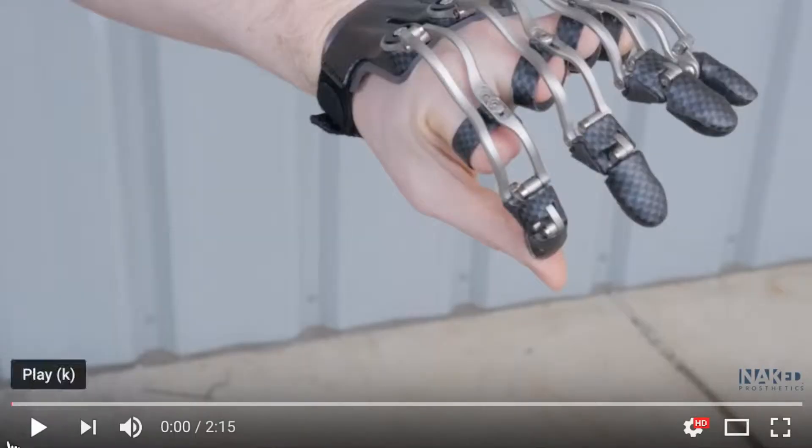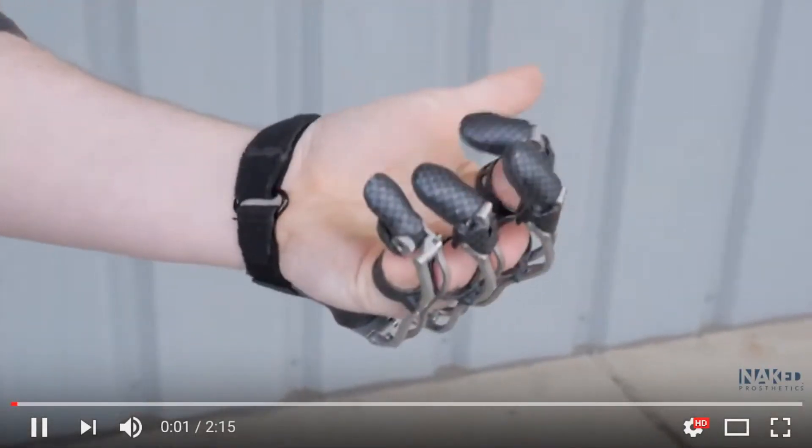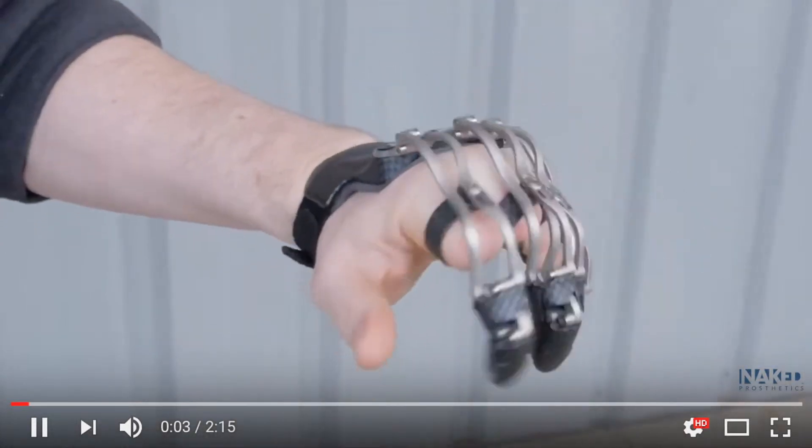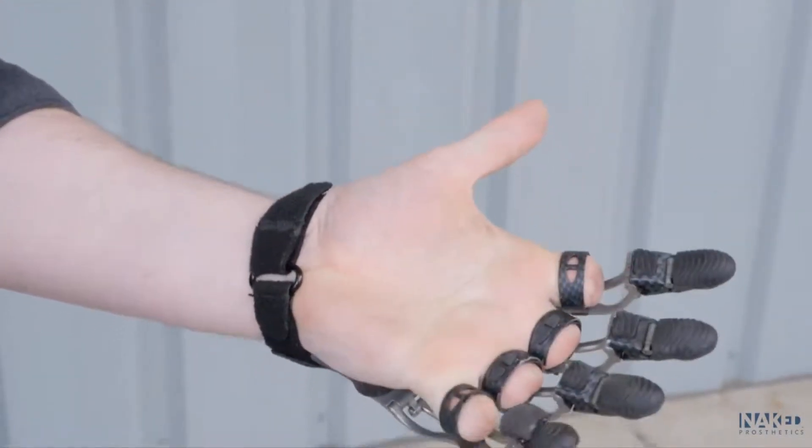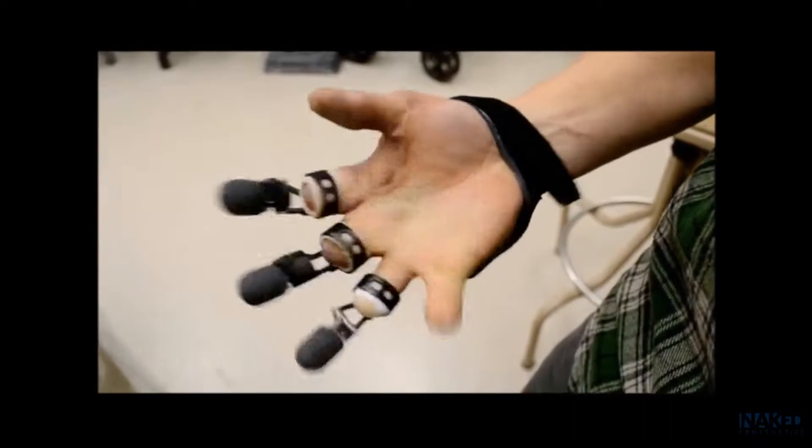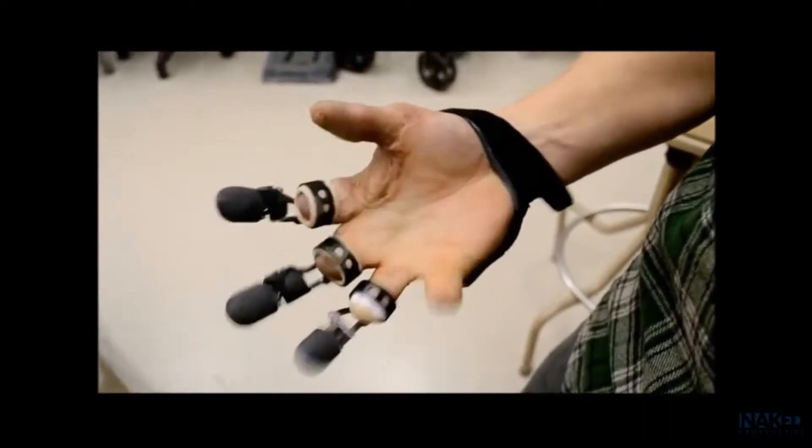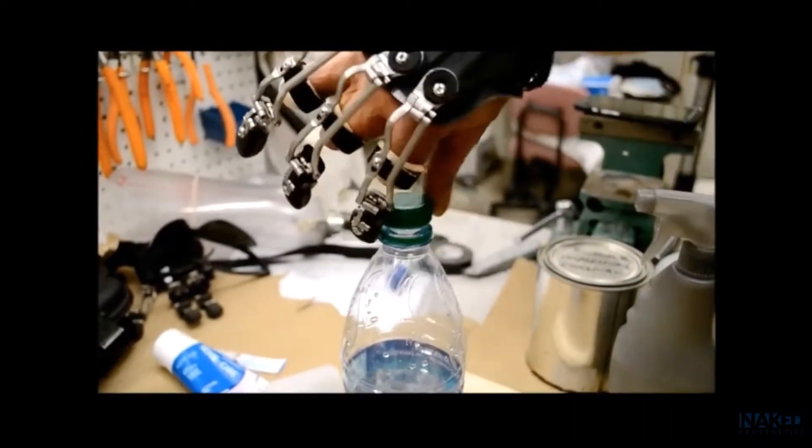This prosthetic harnesses the user's own power and movement to initiate motion in an artificial finger. The prosthetic does this by translating the motion of a user's residual finger through a system of linkages to mimic the user's natural grabbing patterns.